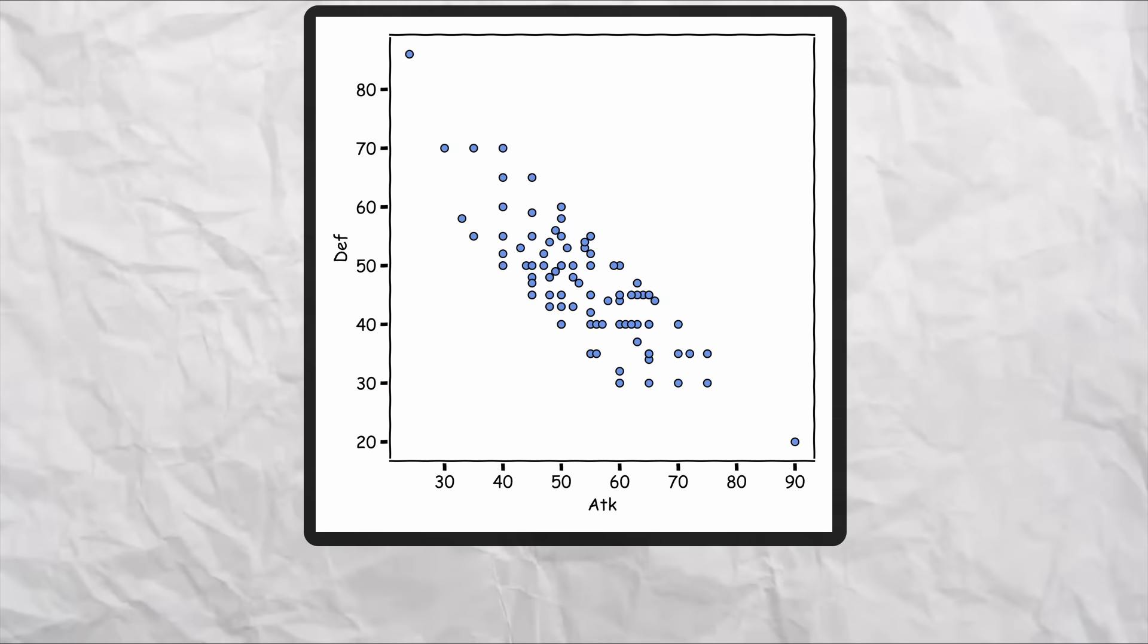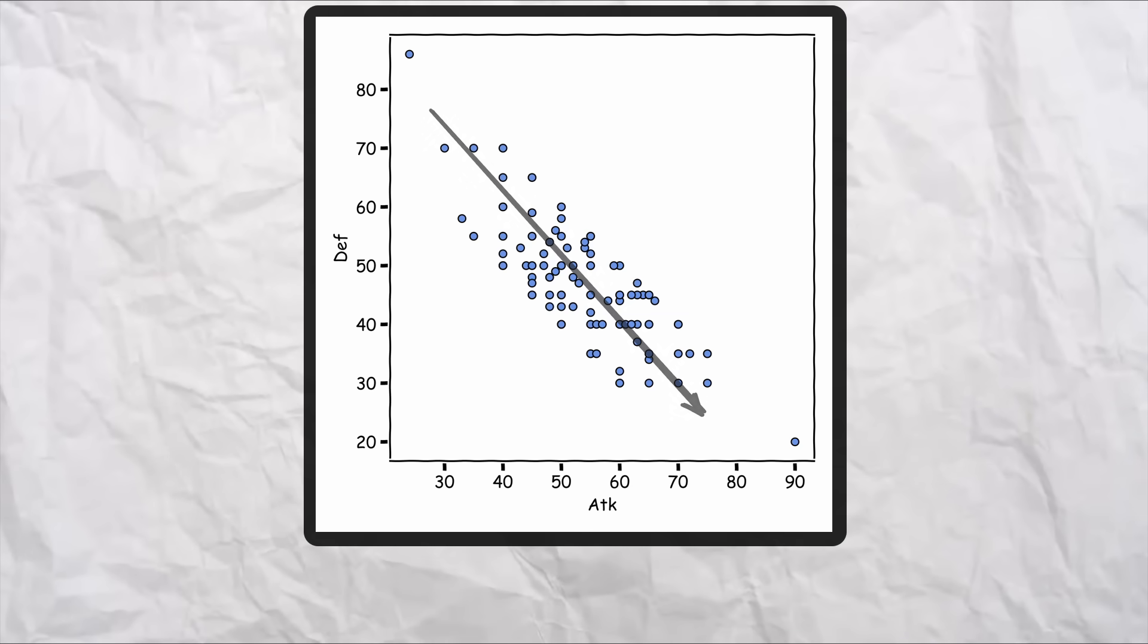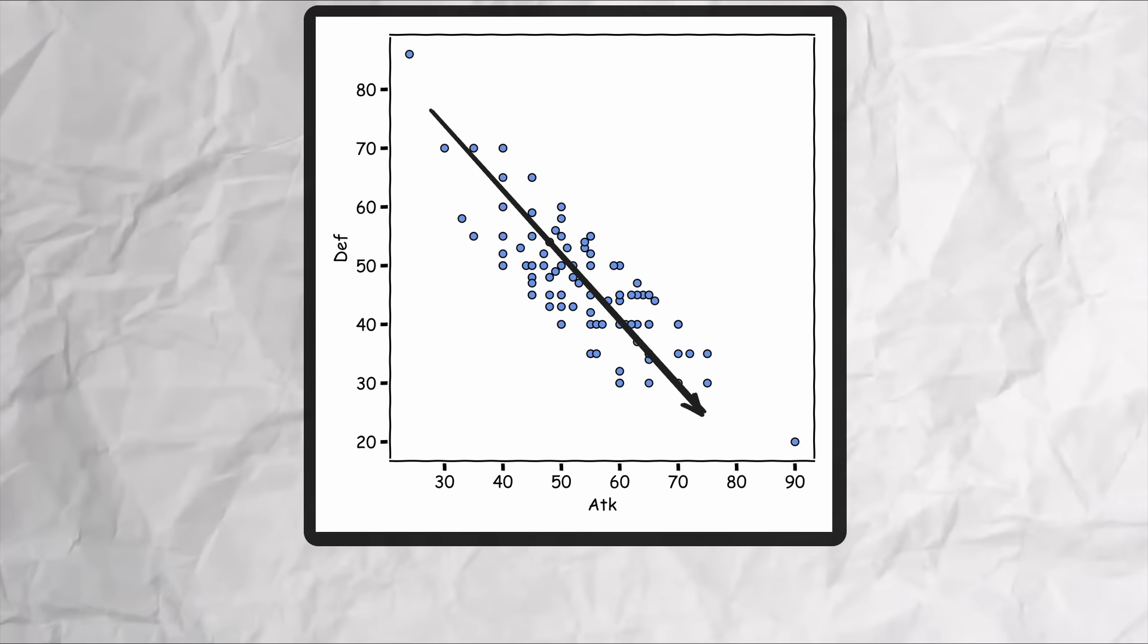It seems like while there's technically two stats, attack and defense, they're very, very correlated with each other. The higher that attack, the lower the defense, and vice versa. An extra point of attack roughly comes at the cost of a loss of a point in defense.